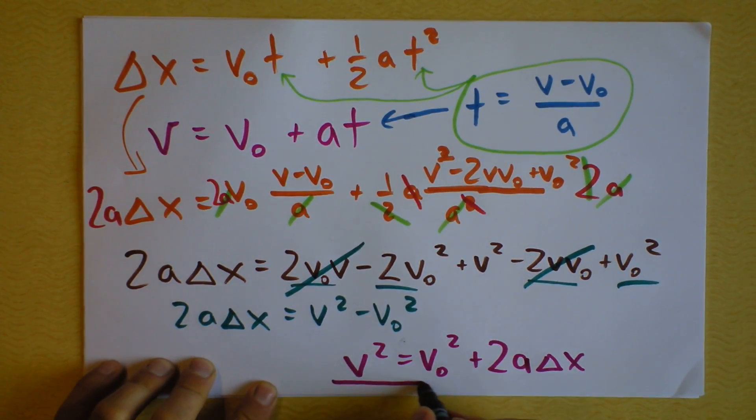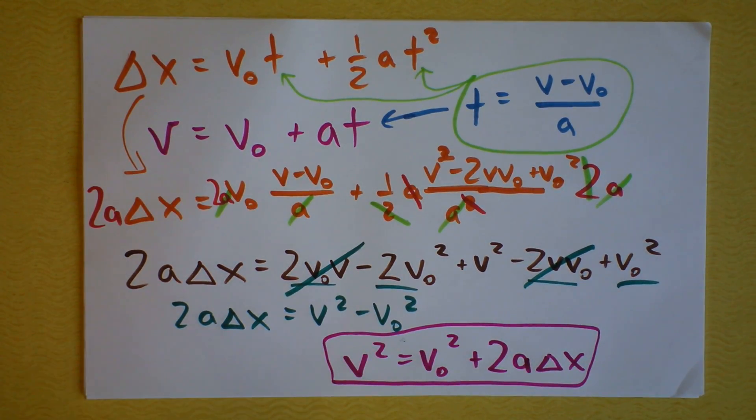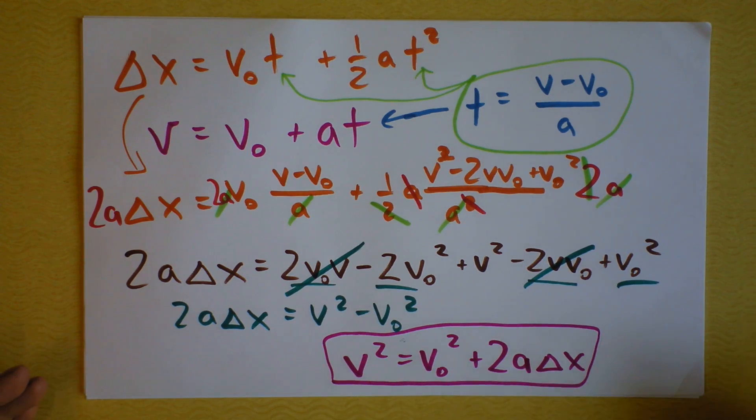And I call this guy a tale of two squares. See if you can figure out why. It's a literary reference, that's why. And notice this equation has no time. So, it's an equation for when you're in a hurry. If you don't have the time!